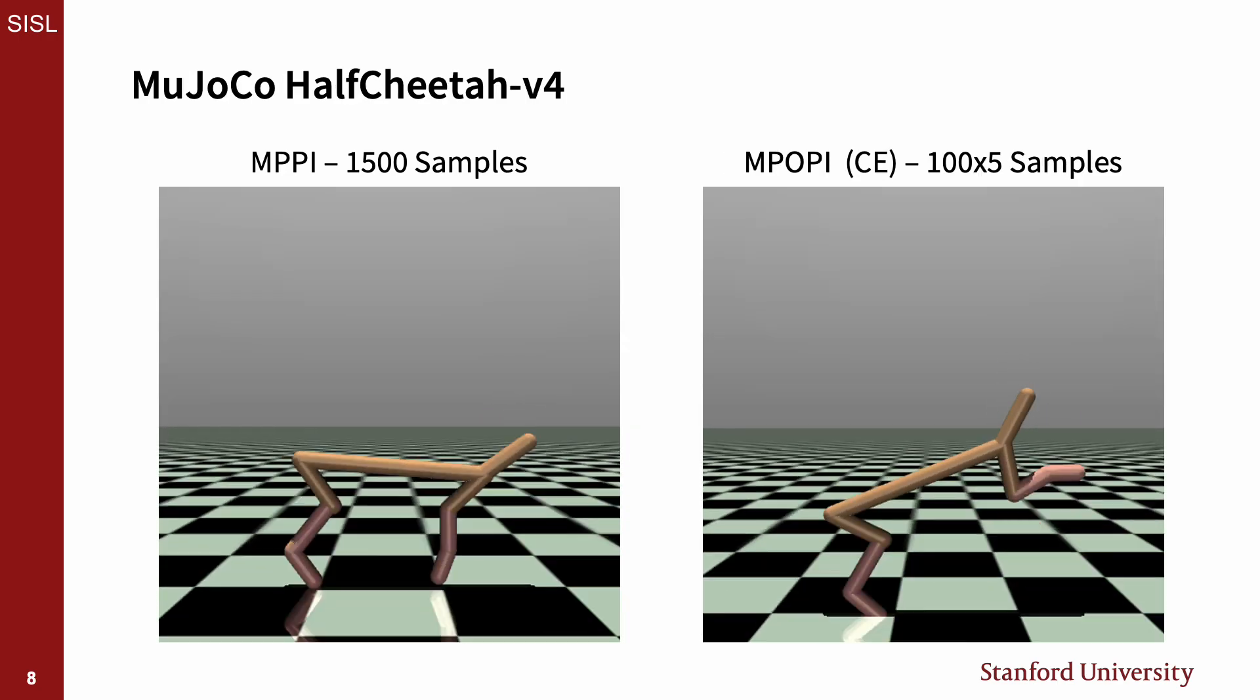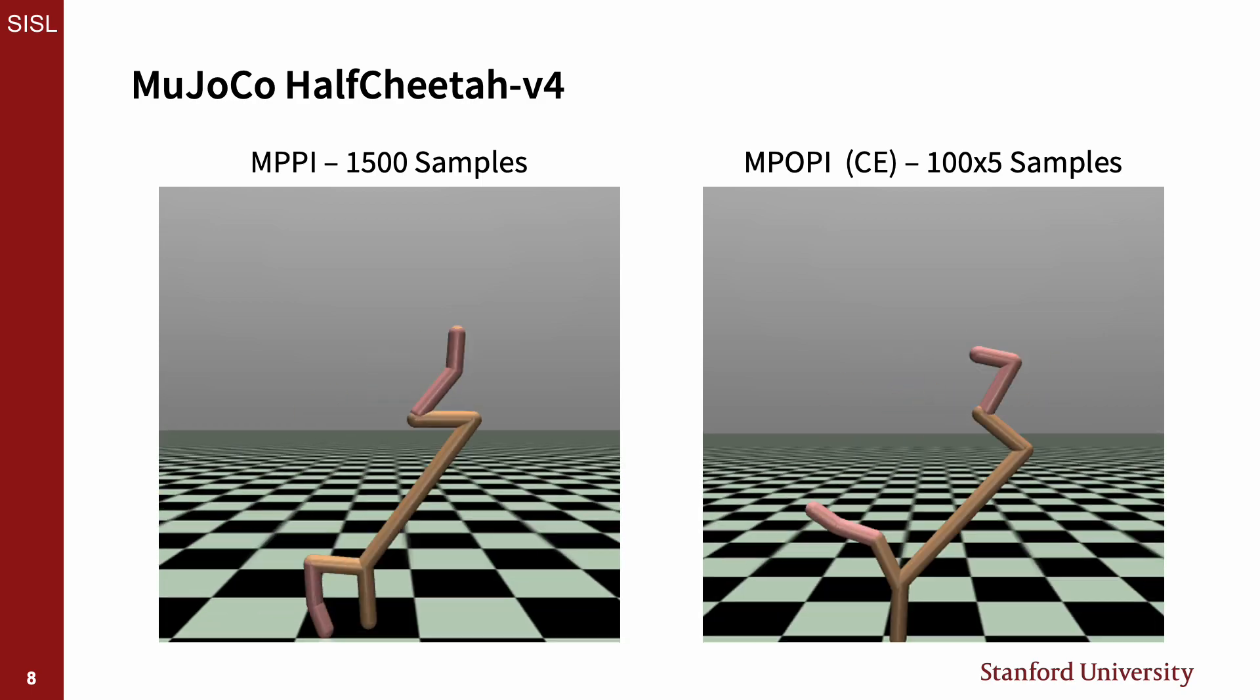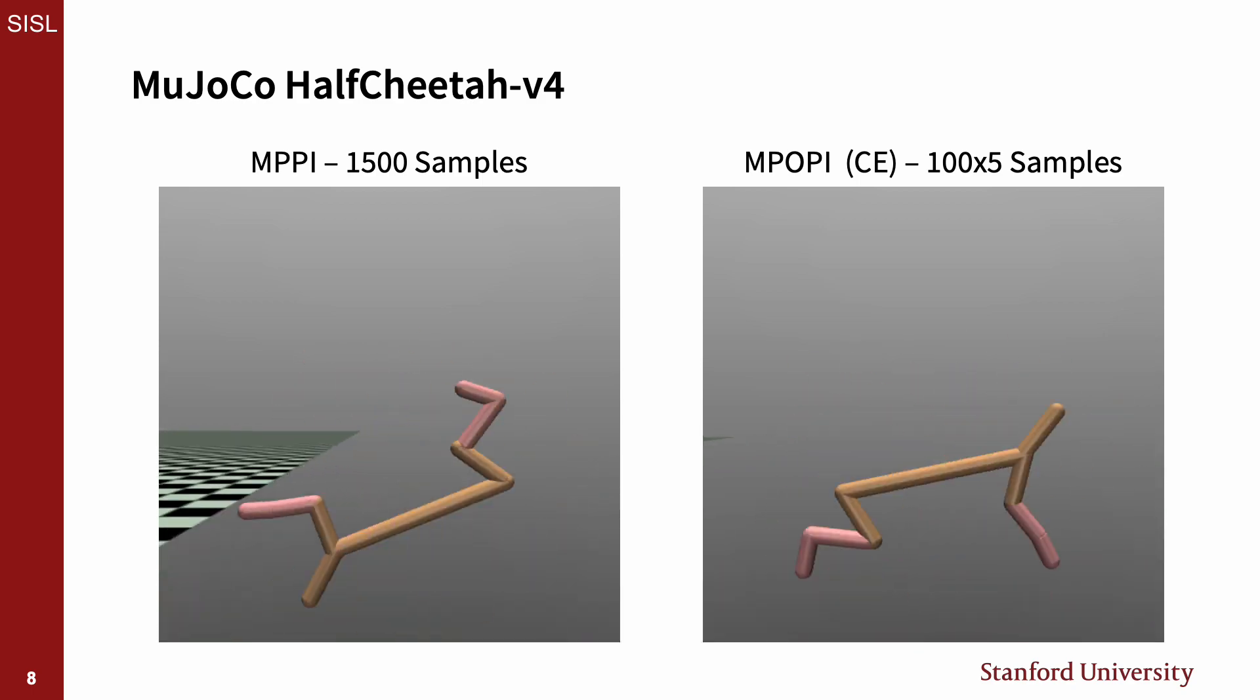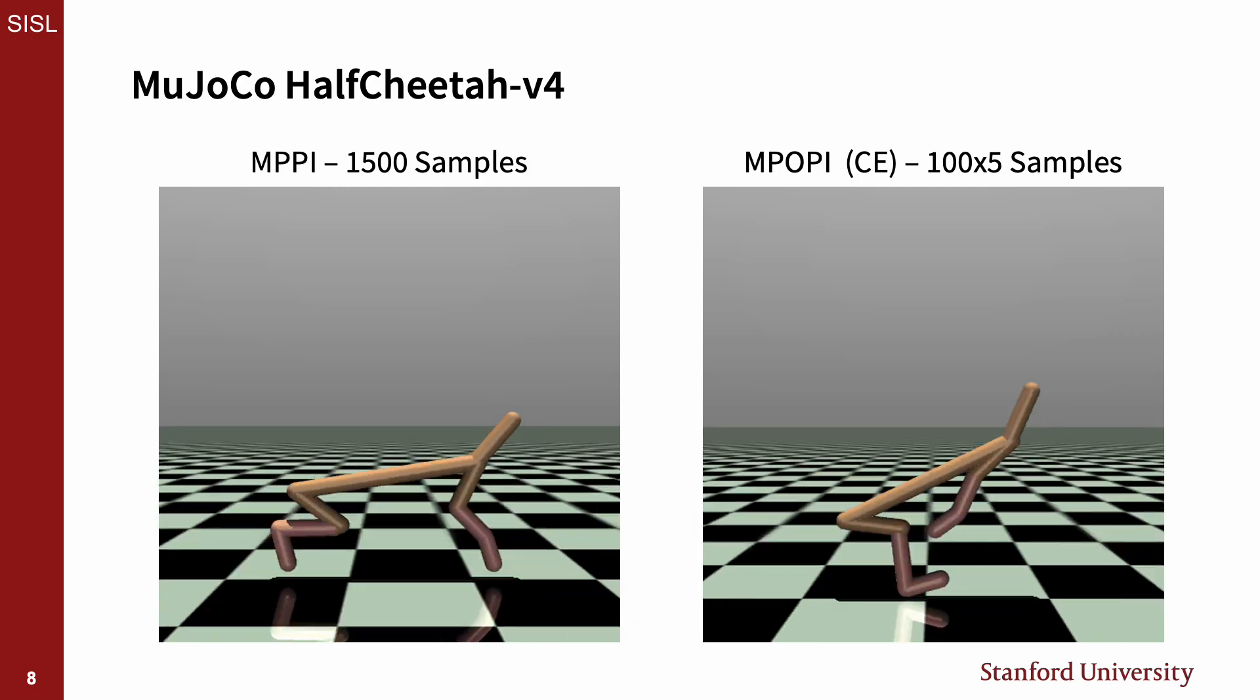With MuJoCo Half Cheetah, both algorithms find a similar local optima that involve rolling to achieve speed. However, MPOPI is able to achieve a higher reward with a third of the samples.